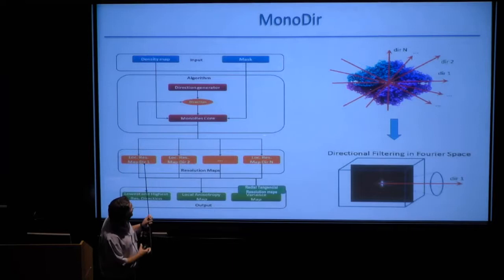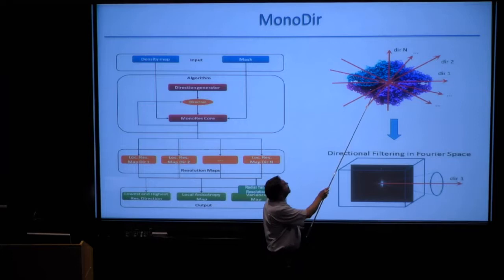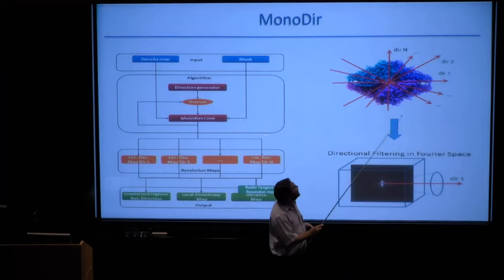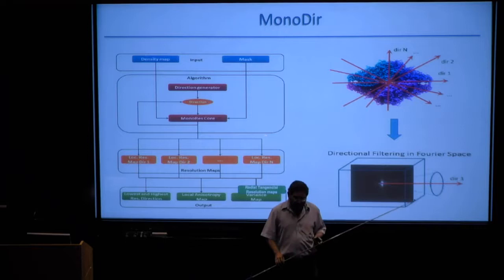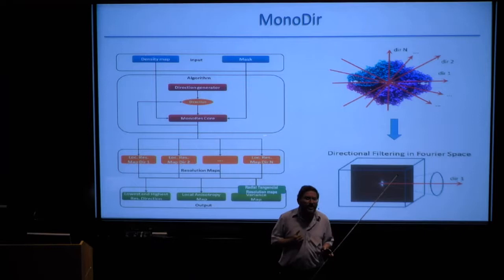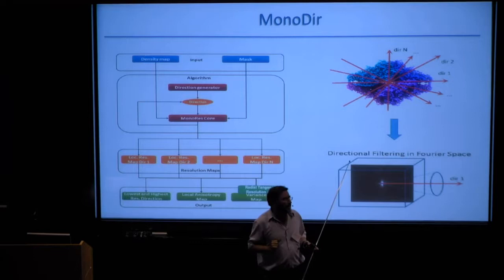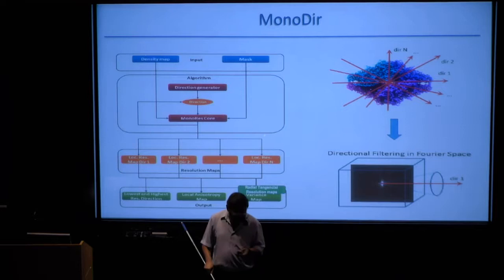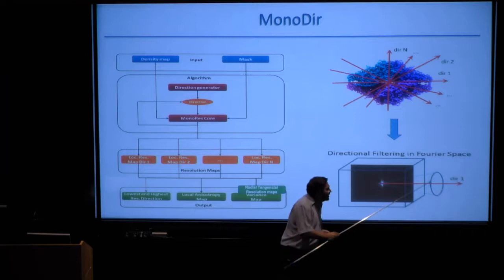Beyond the state of the art in local resolution, we thought about the following: it is fantastic to give you the resolution in one of your voxels, but what if I can tell you how you are doing in that particular voxel along different directions? Not only to tell you that you have seven-angstrom resolution, but that you have very good data coming from one direction and not so much from another.